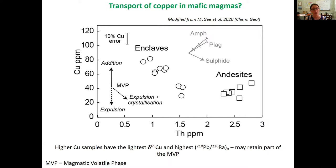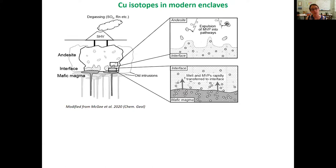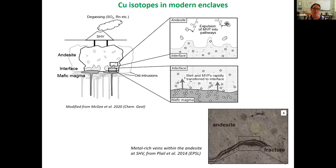We suggest that probably it's the expulsion of a magmatic volatile phase coupled with crystallisation which is driving this trend. Interestingly, the samples which have the higher elemental copper also have those more fractionated negative copper isotope values and the highest lead-210 excesses, which may suggest that they're retaining a part of the magmatic volatile phase. We think that probably the mafic magma is bringing melt and magmatic volatile phases into the system, transferring them very rapidly to an interface area under Sufri Hills Volcano, and then expulsing those volatile phases into pathways. There is good evidence of these in the form of metal-rich veins, previously described by Playl et al. in 2014.